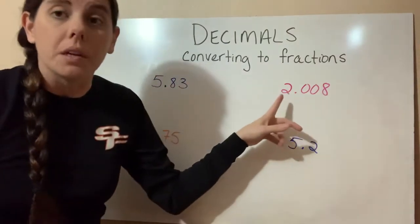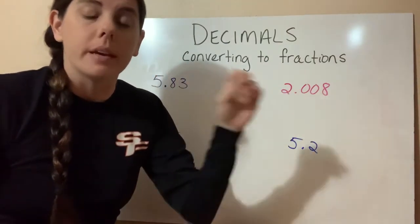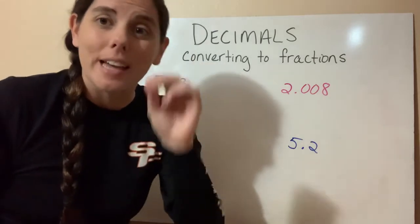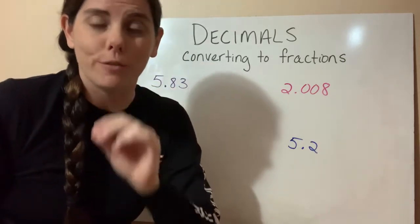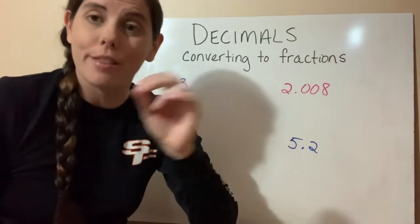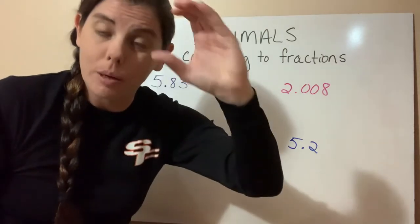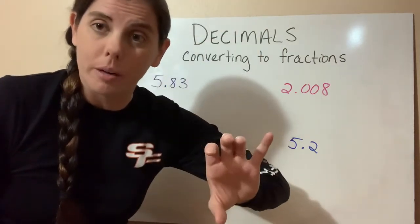We could say 2 and 8 thousandths. Because when you say it like that, you're saying it as the fraction format. So 8 thousandths: 8 would be your top number, 1,000 would be your bottom number.